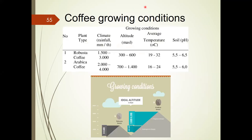The coffee growing conditions depend on the coffee species. For Arabica, the suitable growing altitude is around 3,300 to 6,300 feet and the temperature is around 16 to 24 Celsius degrees with 1,000 to 4,000 millimeter rainfall. For Robusta, the suitable growing altitude is around 0 to 3,300 feet, the temperature is around 19 to 32 Celsius degrees, and the rainfall required is 1,500 to 3,000 millimeters.